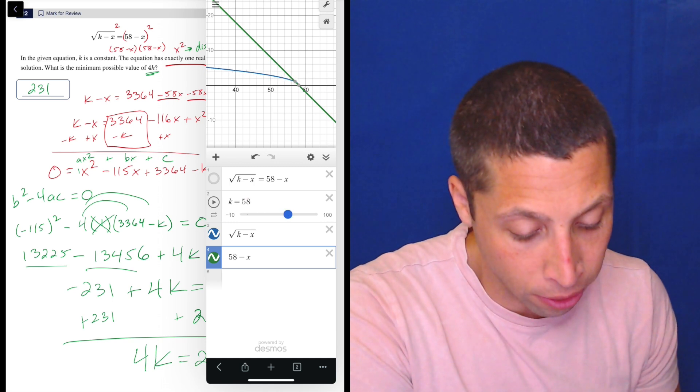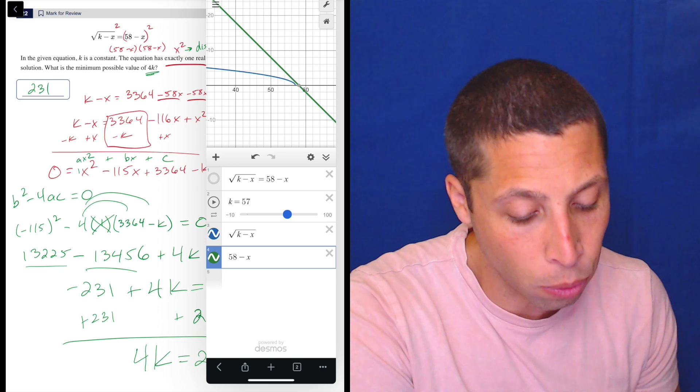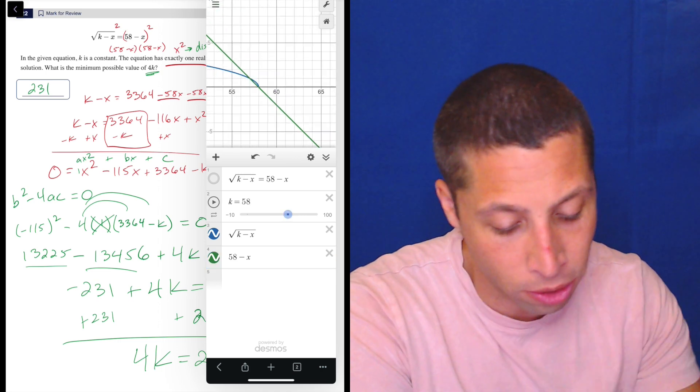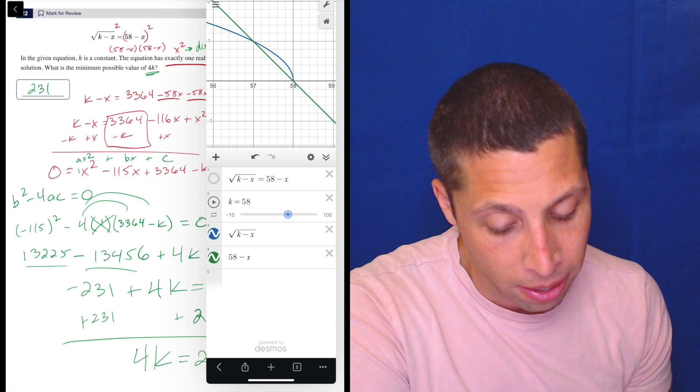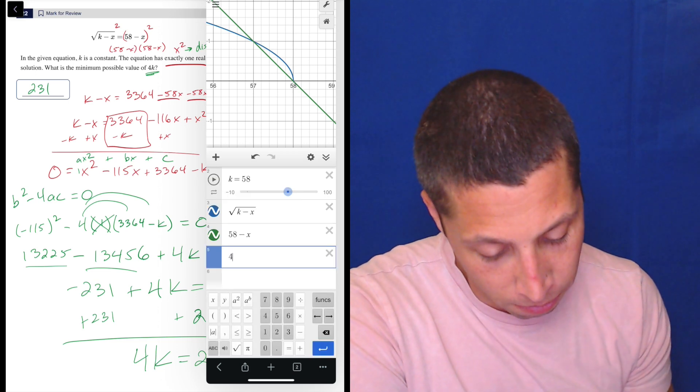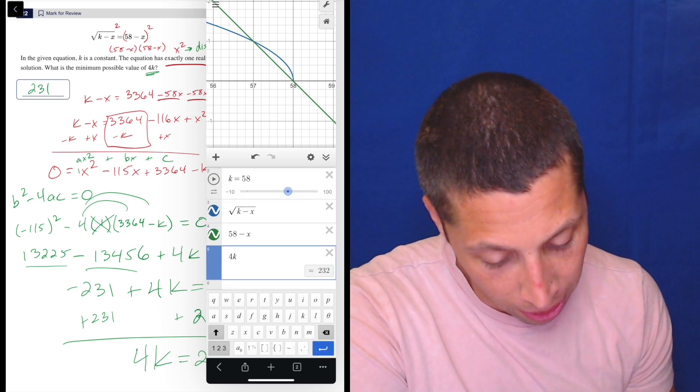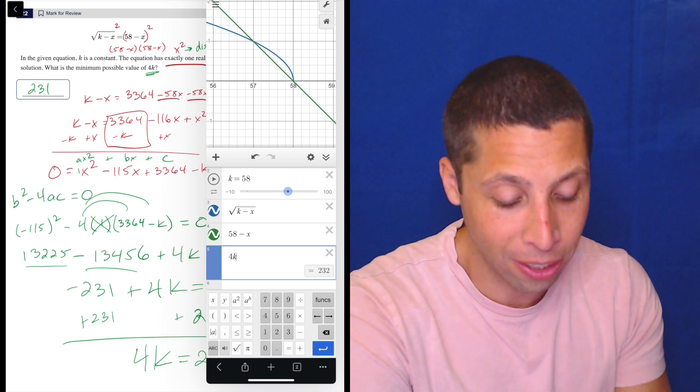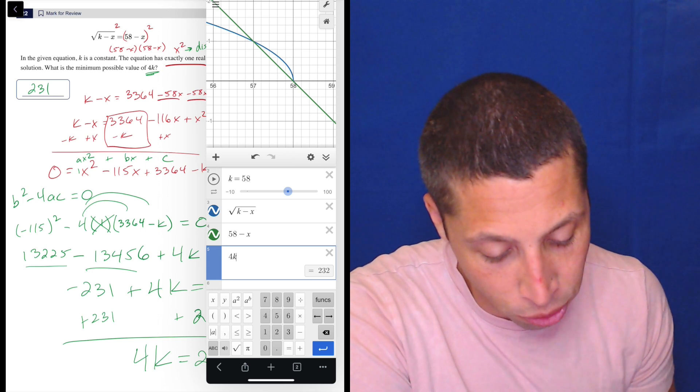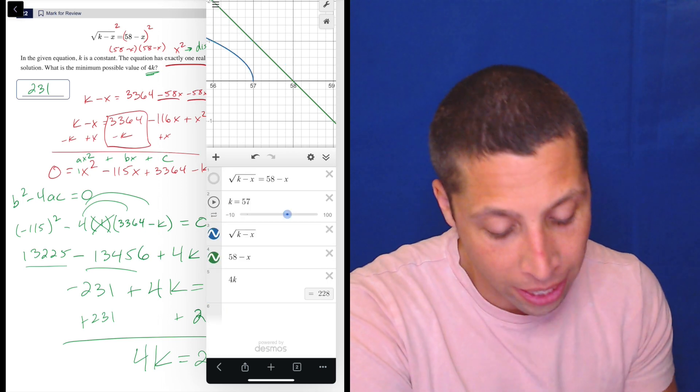And we can see we get two things. And now as I adjust the k, look at how the blue one moves. And it's going to hit that green one. So now we're looking for where they intersect just once. If I zoom in, you can see they intersect twice at 58, right? So four times k is 232, right? So that's the answer I put. But notice when we look at it, you've got two intersections. But if I go to 57, I get no intersections.